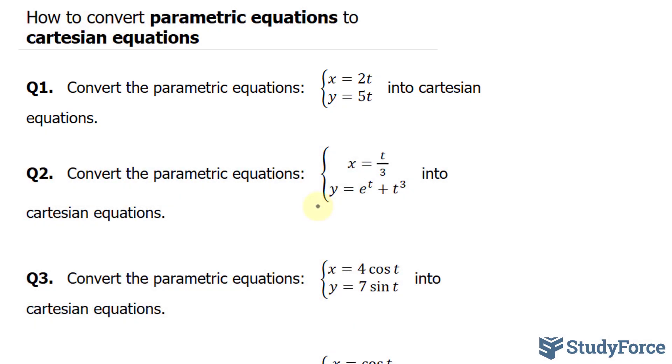What I'll want to do is create one equation that doesn't have the variable t. And to do that, I'll start with the top one. I'll solve for t, where I have x over 2 is equal to t.